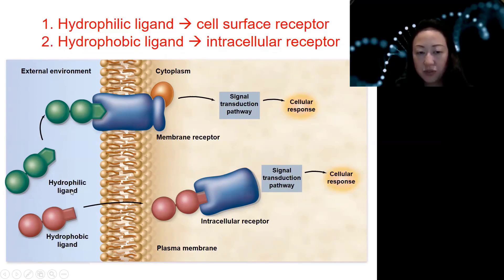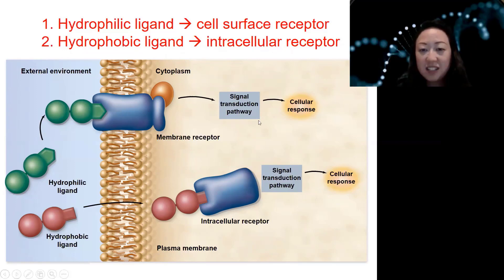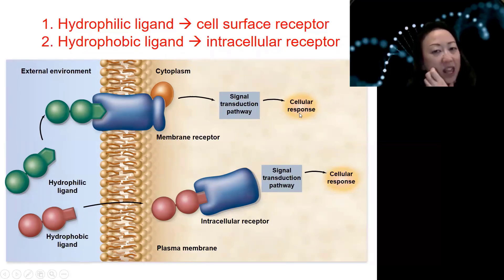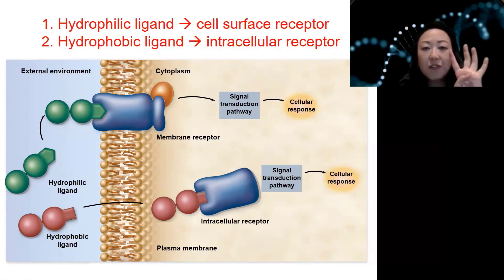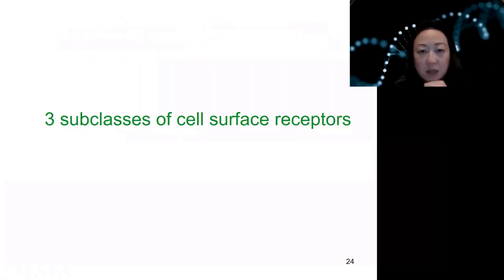So: hydrophilic ligand binds to cell surface receptors; hydrophobic ligand binds to intracellular receptors. This is the hydrophilic ligand, and it binds to a cell surface receptor. This is the intracellular receptor — inside the cell. The first stage is binding, receptor activation, then signal transduction, and cellular response. So there are four types, but you can also separate cell signaling according to what kind of ligand or what kind of receptors.